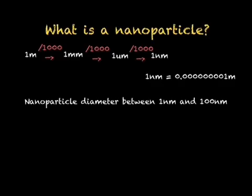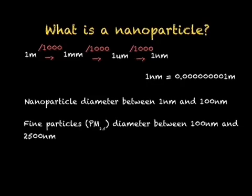Slightly larger than nanoparticles, we have fine particles, with a value of PM2.5. These particles have a diameter between 100 nanometers, which is one times ten to the minus seven meters, and 2,500 nanometers, 2.5 times ten to the minus six meters.